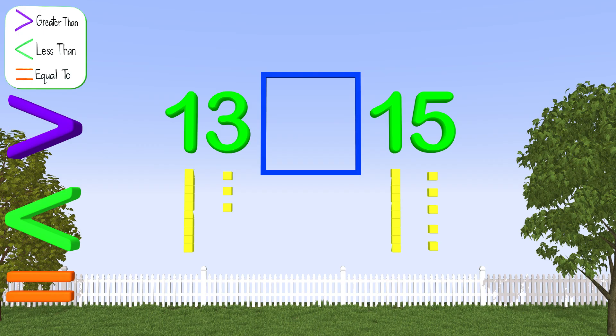Now to compare the numbers reading from left to right, which symbol will we use? We will use the less than symbol. Amazing! 13 is less than 15 and we can easily see that with the blocks and the numbers.